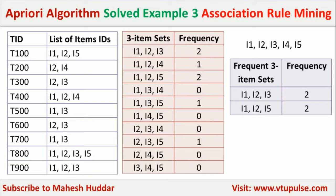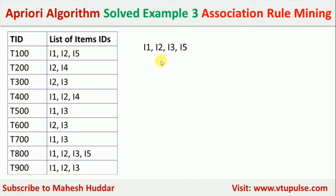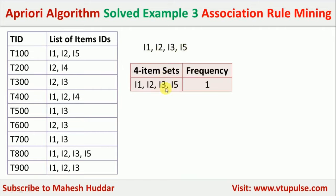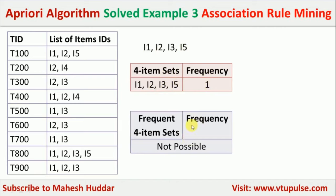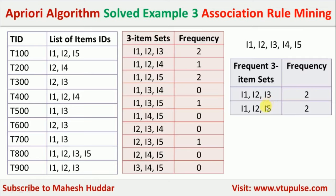From these two frequent three-itemsets, we attempt to generate frequent four-itemsets. The unique items are I1, I2, I3, and I5. The only possible four-itemset has a frequency of 1, which is less than the minimum support of 2, so it does not qualify. Therefore, I1-I2-I3 and I1-I2-I5 are our final frequent itemsets.